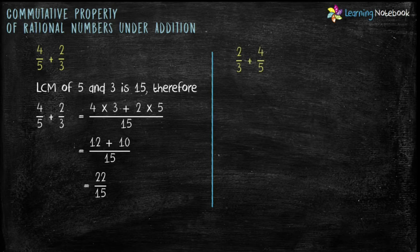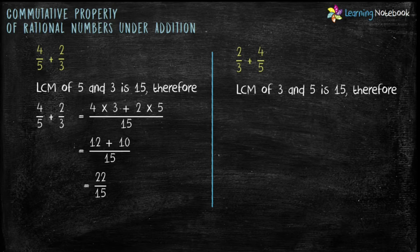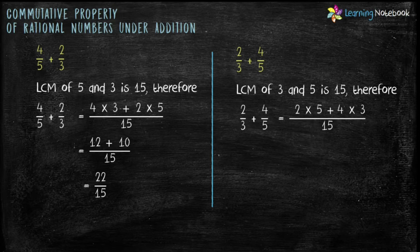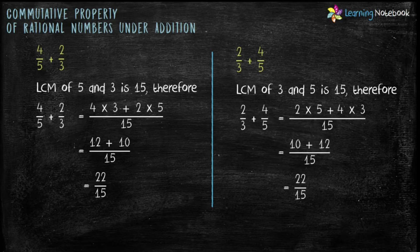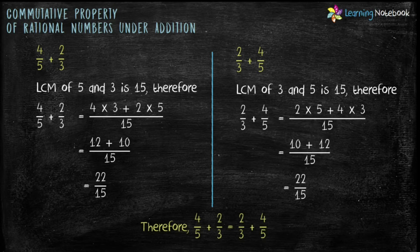Now, let's reverse the order of these two rational numbers and add them. Again, LCM of 3 and 5 is 15. Therefore, we get 2 into 5 plus 4 into 3 by 15, which is equal to 10 plus 12 by 15, and we get the sum as 22 by 15. So in both the cases, the sum remains the same. Therefore, we can say 4 by 5 plus 2 by 3 equals to 2 by 3 plus 4 by 5.